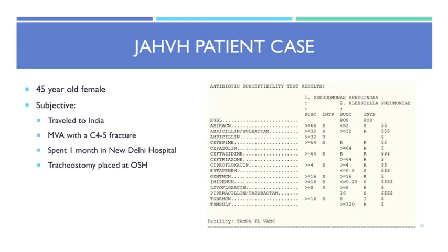A real-life VA patient case to bring it home: a 45-year-old female who traveled to India, was involved in a motor vehicle accident, became a C4-5 quadriplegic, spent one month in a New Delhi hospital, had a tracheostomy placed, came here, and ended up colonized in her lungs with Pseudomonas. Looking at her Pseudomonas culture, everything was resistant — pan-resistant. If she picked up an MCR plasmid in that setting, it's a frightening scenario. Resistance is moving closer to home.